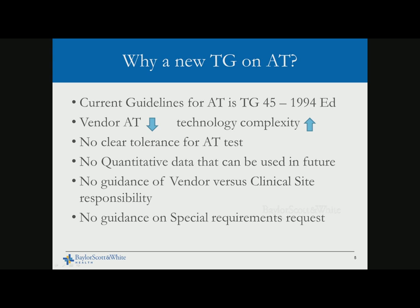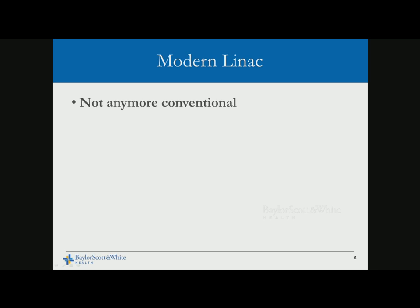There is also a need for guidance on what is the vendor's responsibility versus the clinical site's responsibility. There have been anecdotal cases where disagreement between facility and vendor caused acceptance testing to stall due to lack of understanding. There is also a need for guidance on special requirements like beam matching for multiple machines, non-conventional energies, and fine-tuning radiation isocenter — these need to be clearly stated in the contract.